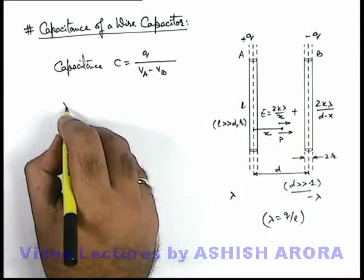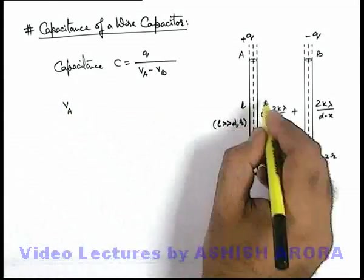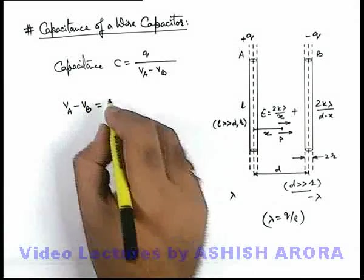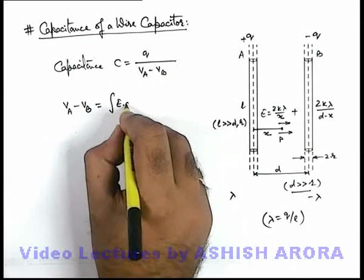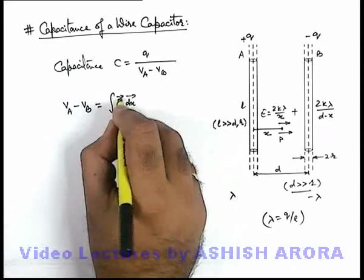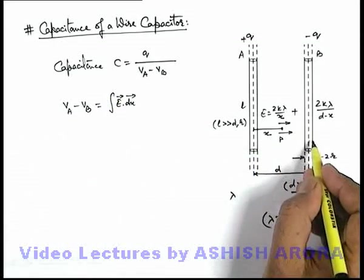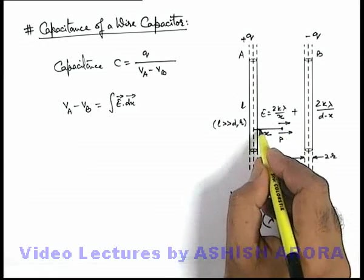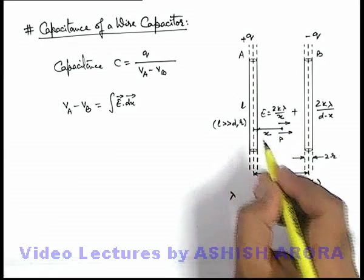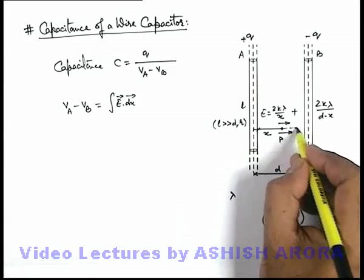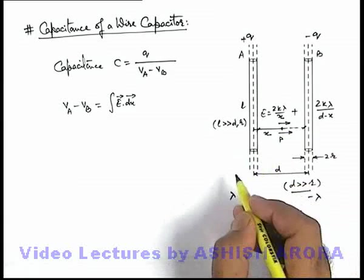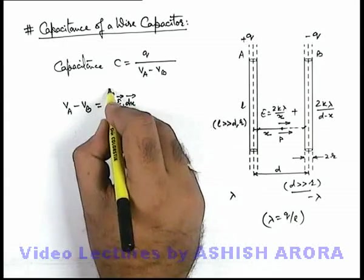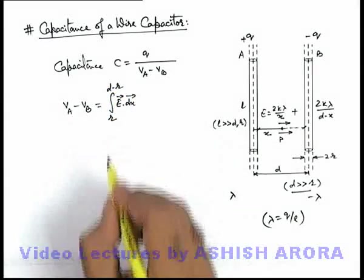And using this electric field we can easily calculate the potential difference between the two wires V_A minus V_B. That can be given as integration of E dot dx, and that is integrated from wire A to wire B. And in this situation we know inside the metal electric field is zero, so we'll integrate this electric field from the surface of this wire to the surface of the negatively charged wire. So the limits of x will substitute from x equal to r to x equal to d minus r.